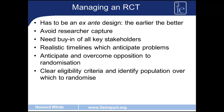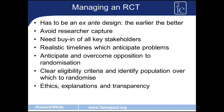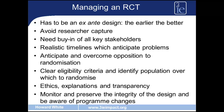You need to establish clear eligibility criteria for who's eligible for the intervention, and then identify the population satisfying those criteria over which you're going to conduct the randomisation. As in any research on human subjects, ethical considerations are important, so you need to be explaining to them about the nature and purpose of the trial, and you need to make sure that transparency is maintained in the implementation of the evaluation. Finally, you need to monitor and preserve the integrity of the design you've put in place, whilst being aware of any programme changes which may require you to modify the questions you're answering in your randomised controlled trial.